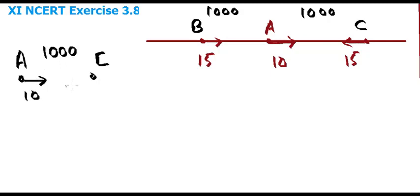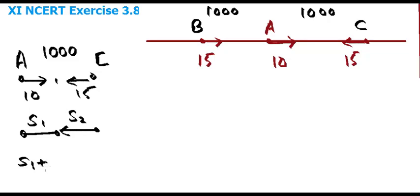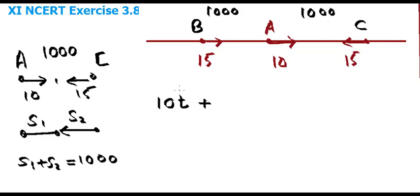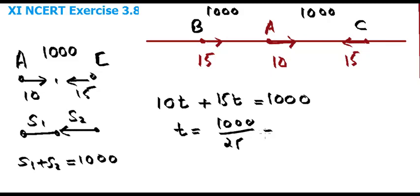Both A and C are moving. When they meet, A would have traveled some distance S1, and C will also travel some distance S2. S1 plus S2 must equal 1000 m. S1 is the distance traveled by A at speed 10, so S1 = 10T. C travels S2 at speed 15, so S2 = 15T. Their sum must be 1000, giving T = 1000/25 = 40 seconds.